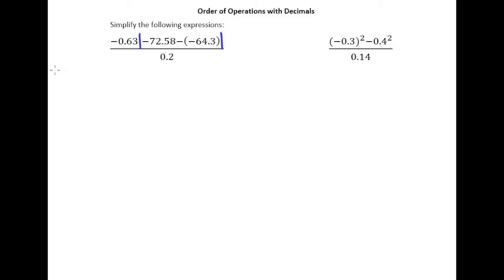So over here is where I'll keep the main body of my work. So negative 0.63 times negative 72.58, and a little simplification I'll make right away. I see minus a negative inside, so I'm going to go ahead and cross the line, change the sign, so when I'm rewriting this for the first time, I'll make it plus 64.3. Of course, all that's divided by 0.2.